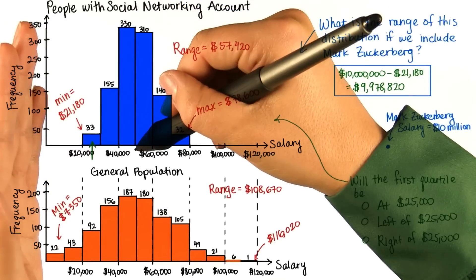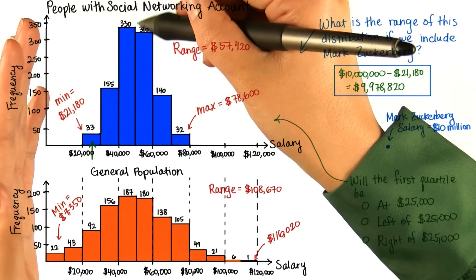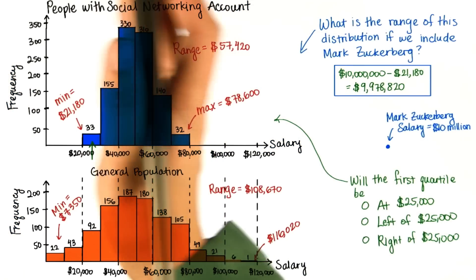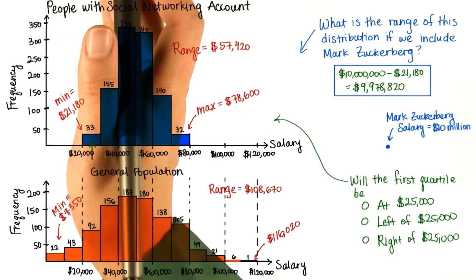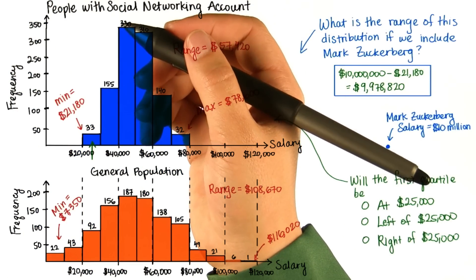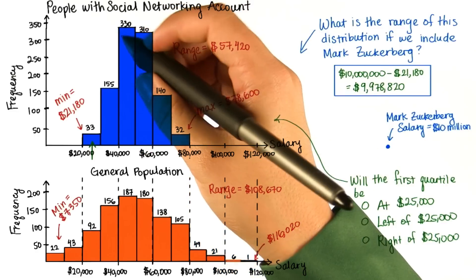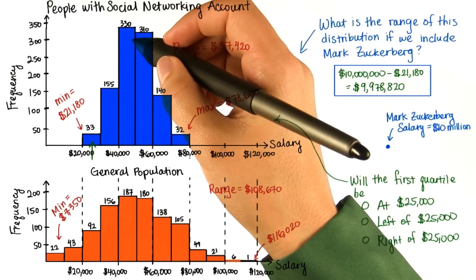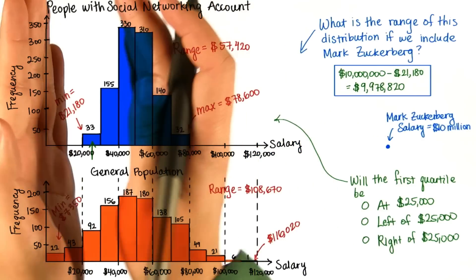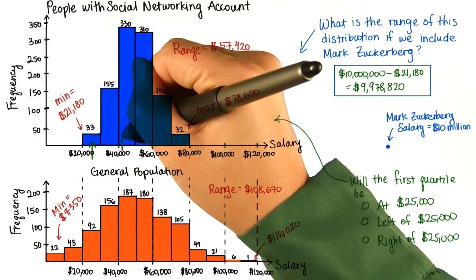If we look at this graph, it looks like 50,000 splits the data in half. So we have about 500 values on this side and 500 on this side. 500 split in half is 250. So we know that the first quartile has to occur when there are 250 values, which will be somewhere here.